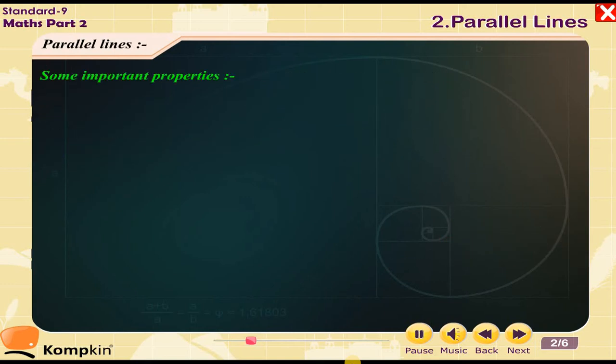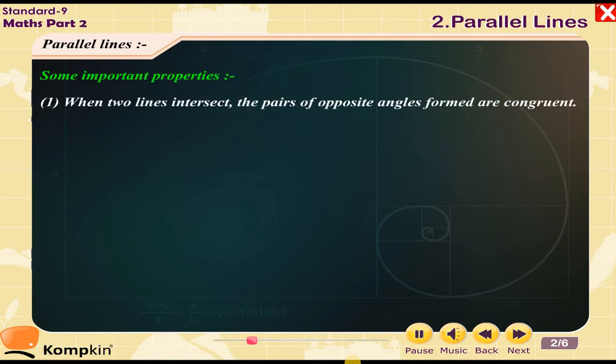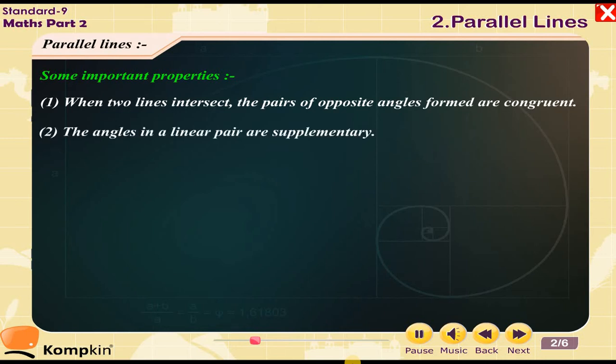Some important properties. 1. When two lines intersect, the pairs of opposite angles formed are congruent. 2. The angles in a linear pair are supplementary.